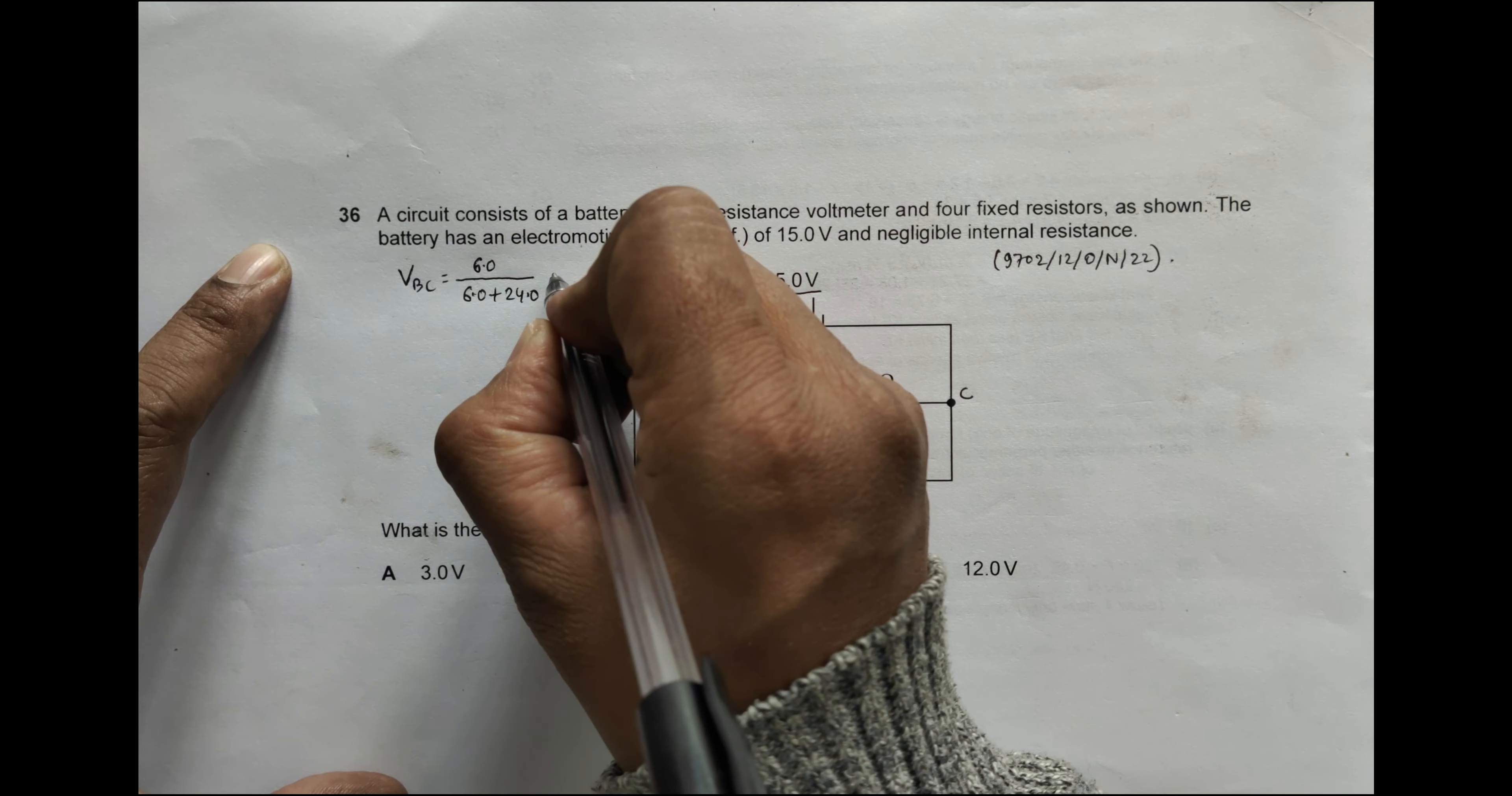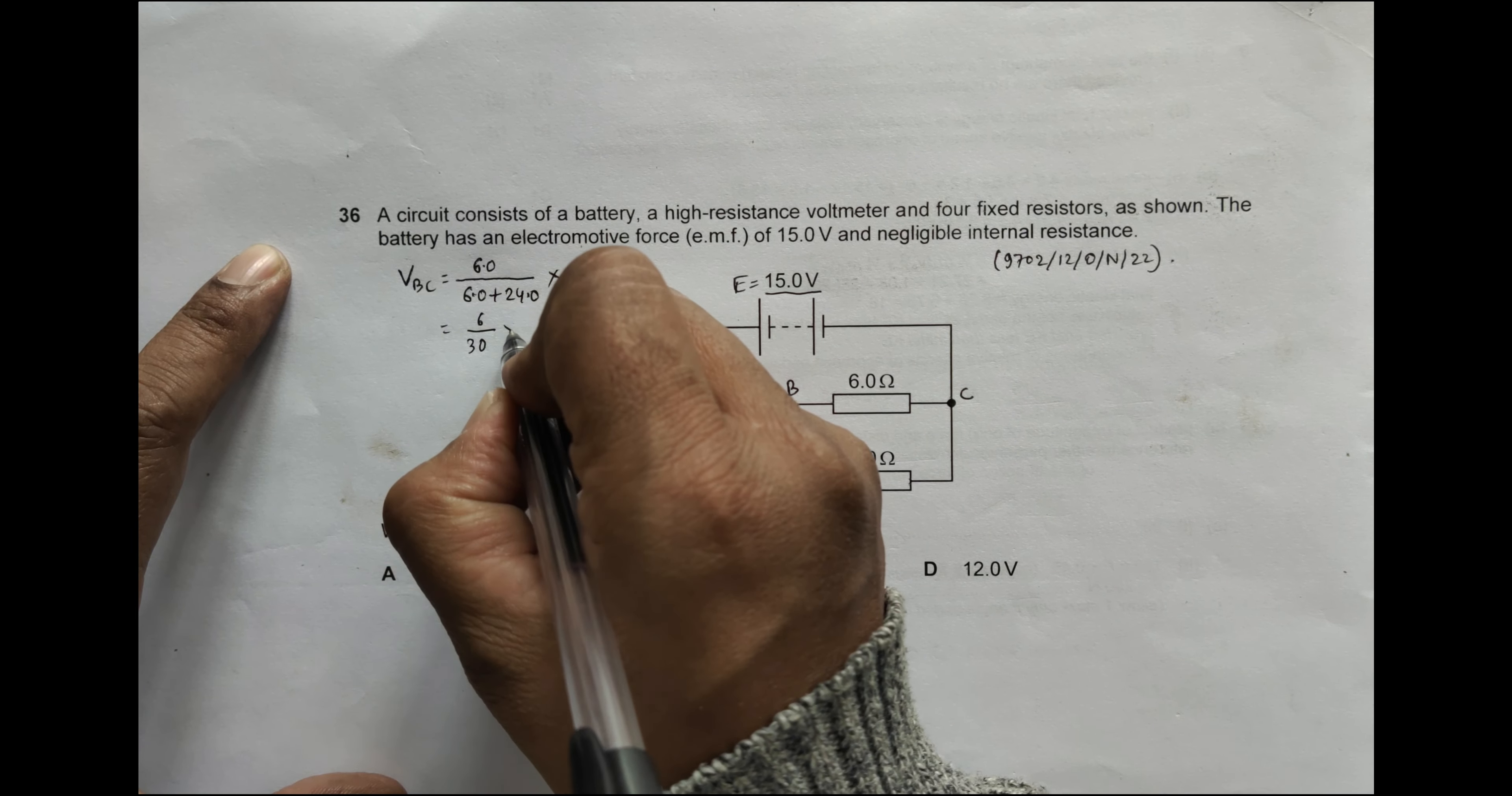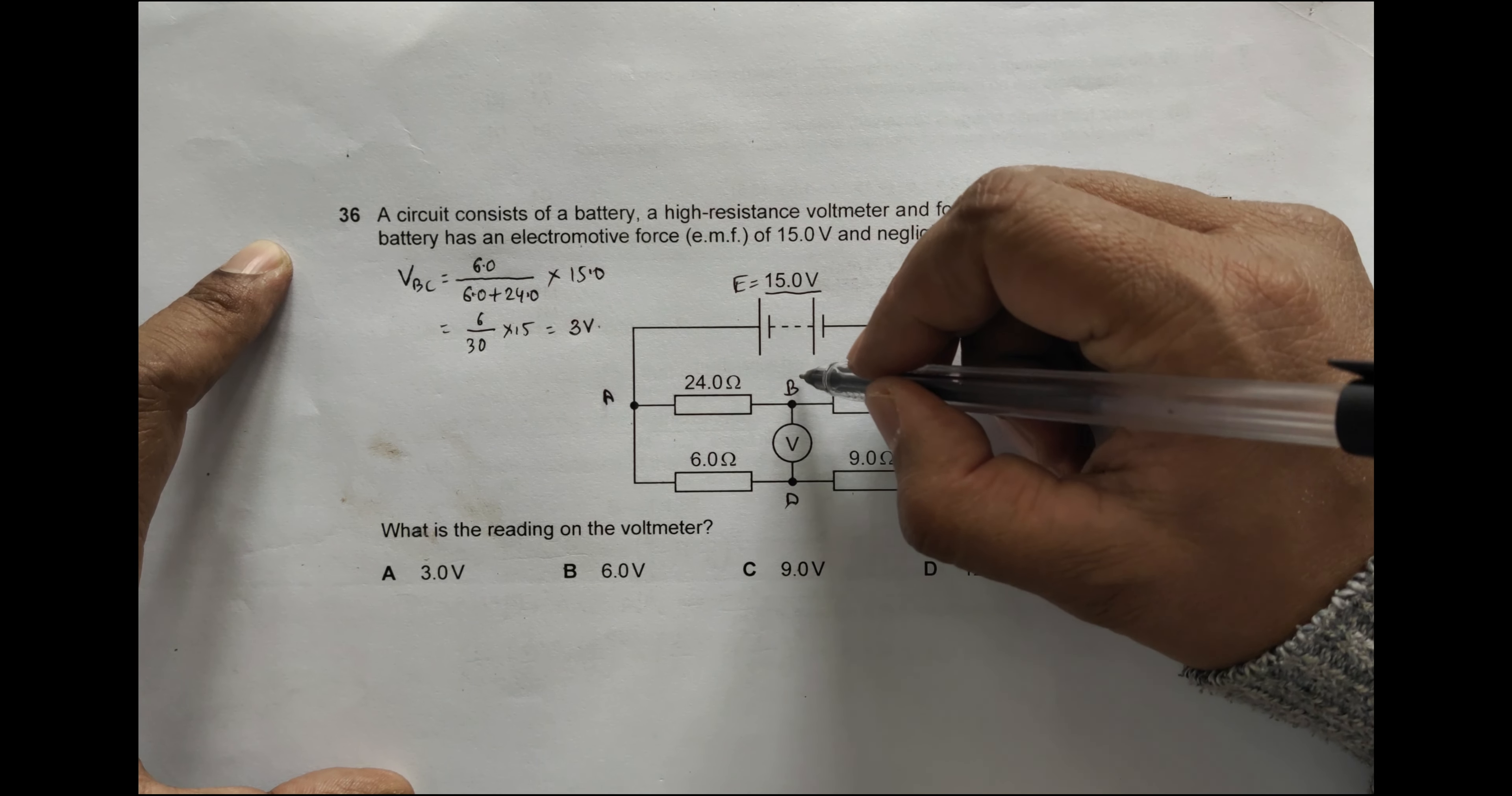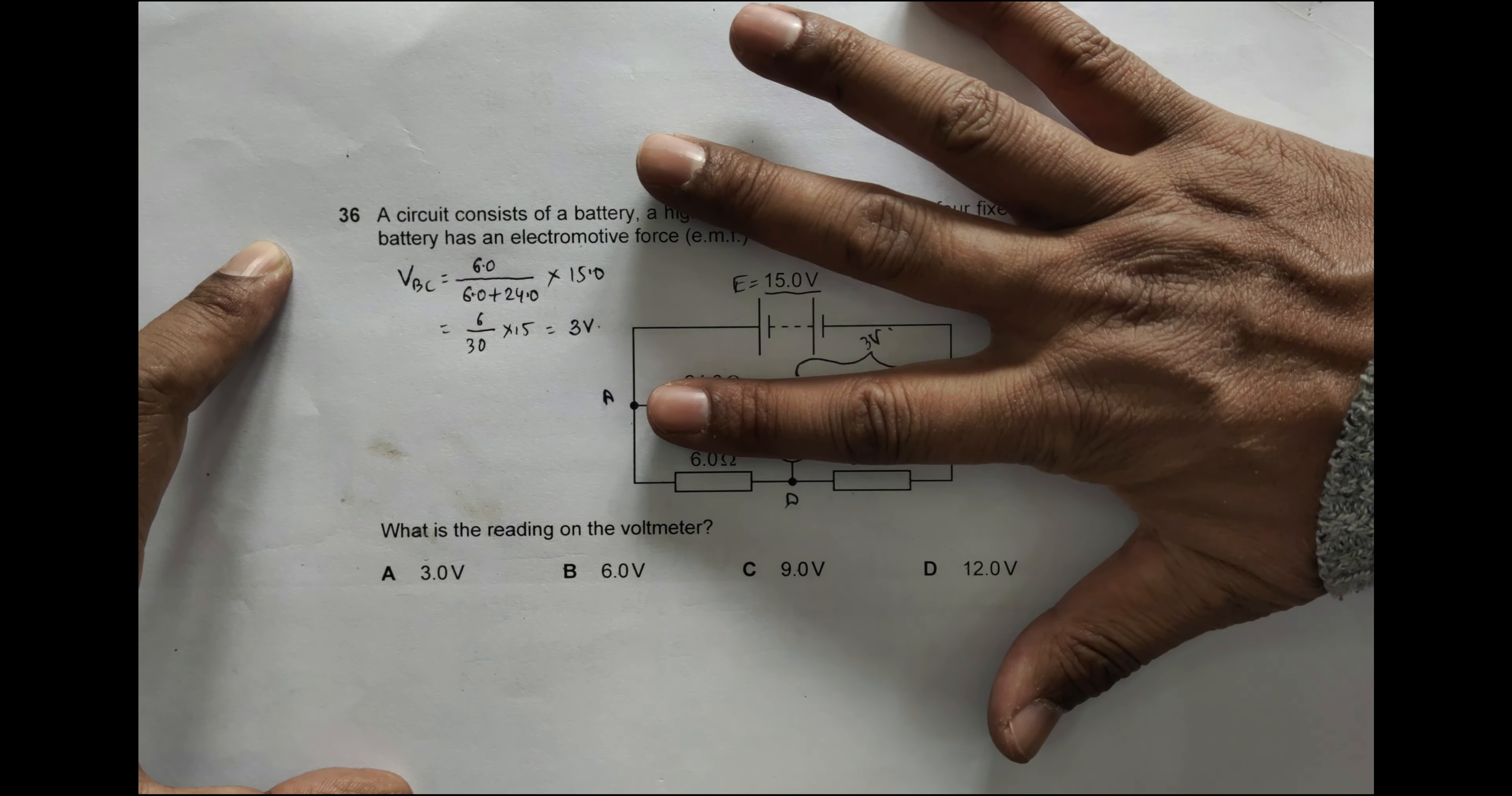So it should be equal to 6 by 30 into 15, which comes to be equal to 3 volts. So this voltage from here to here is equal to 3 volts.